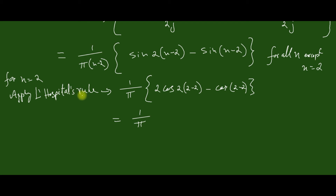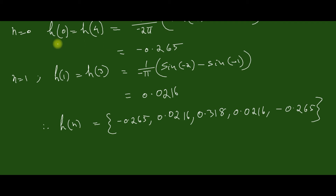In this particular case, when n equals 2, we apply L'Hôpital's rule. For n equal to 2 we get h(2) equal to 1/π. For n equal to 1 we get h(1) equal to h(3) equal to 0.016. Finally, we can compute h(n) as this sequence.